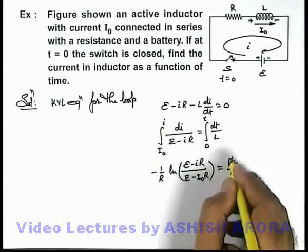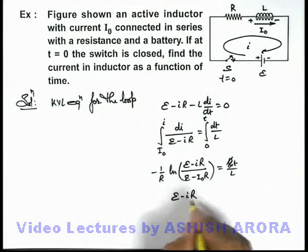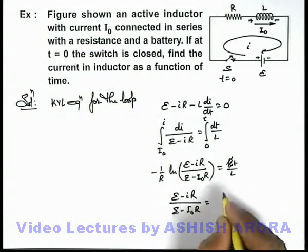This R we can take on the other side, so this will become E minus iR divided by E minus i-not R, is equal to minus Rt by L.